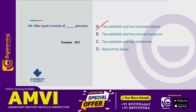For the Diesel cycle: it consists of constant volume, constant pressure, and 2 adiabatic processes. For the Carnot cycle: it consists of 2 adiabatic and 2 isothermal processes. Remember these cycle compositions for the exam.